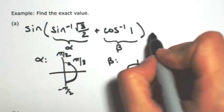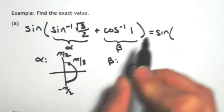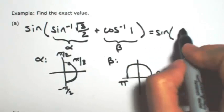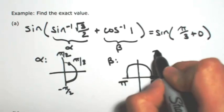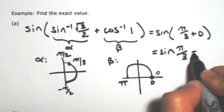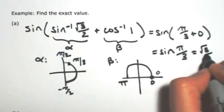So I can actually find what these angles are. So this becomes the sine of alpha, which is pi over 3, plus beta, which is 0. In other words, sine of pi over 3, which we already said a second ago was square root of 3 over 2.